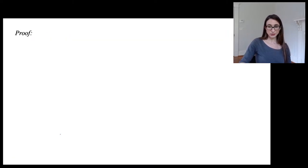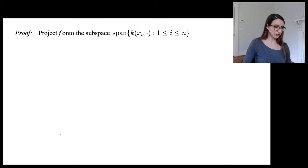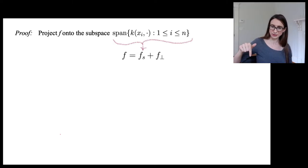Okay, so the proof here is that first we take f and project it onto the span of the kernels. So we're actually going to decompose f into two pieces, and now that we have an inner product, we have a notion of orthogonality. So we can actually decompose f into two pieces, one piece that sits in the span of those kernels, and the other piece that's orthogonal to it.